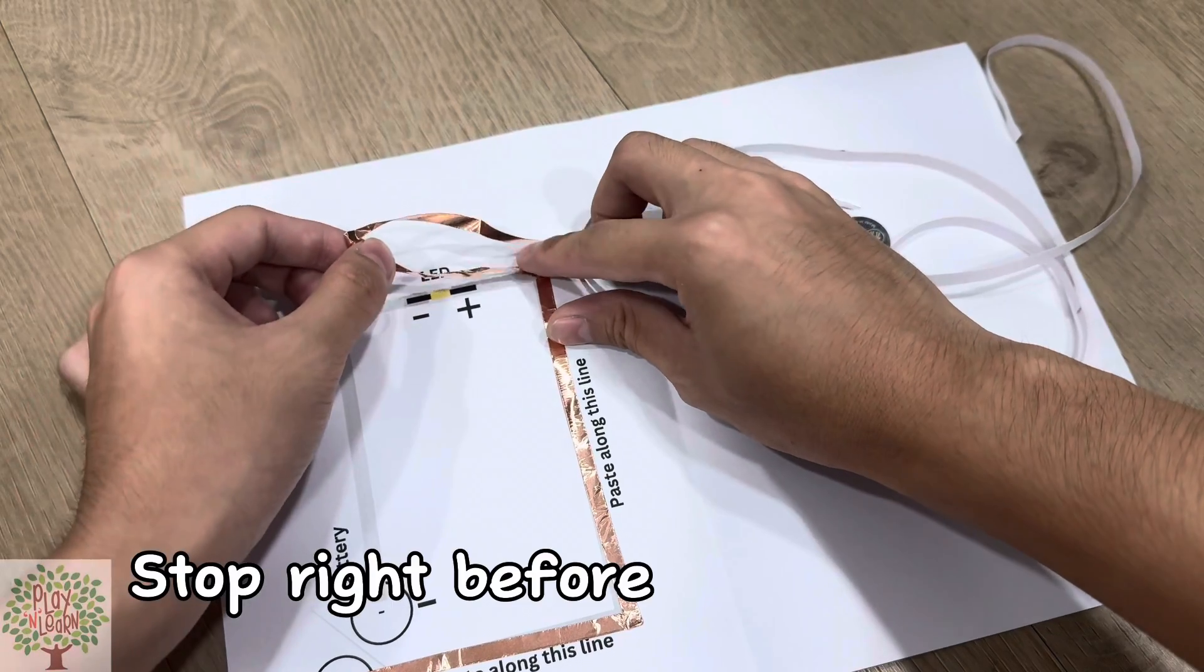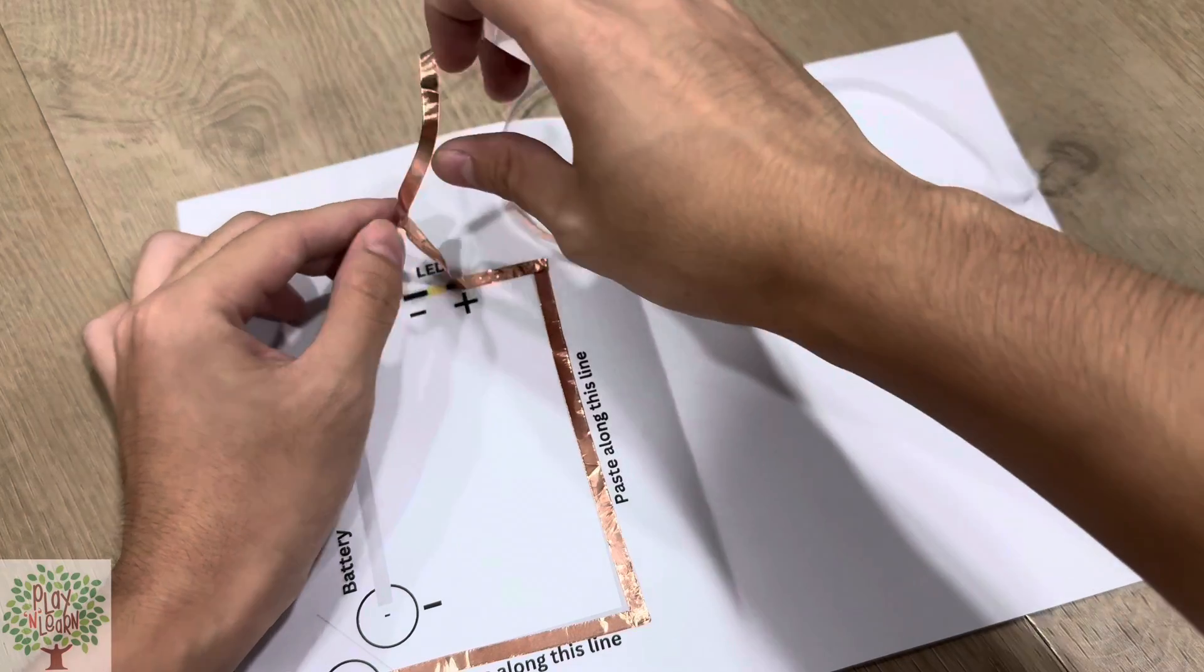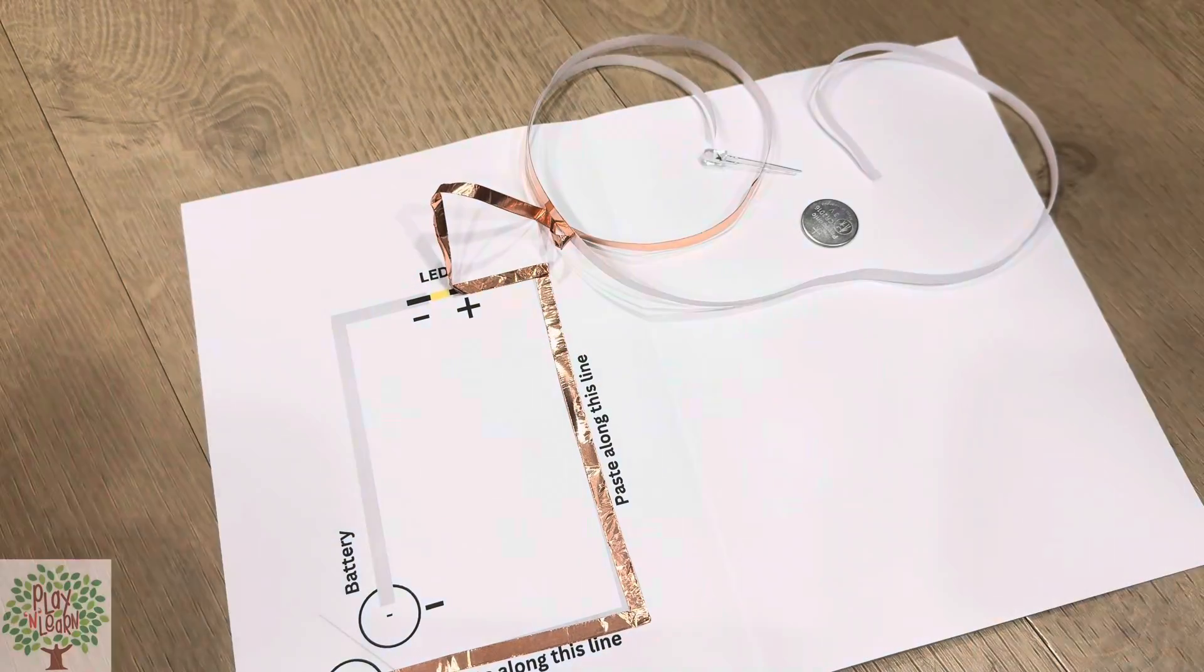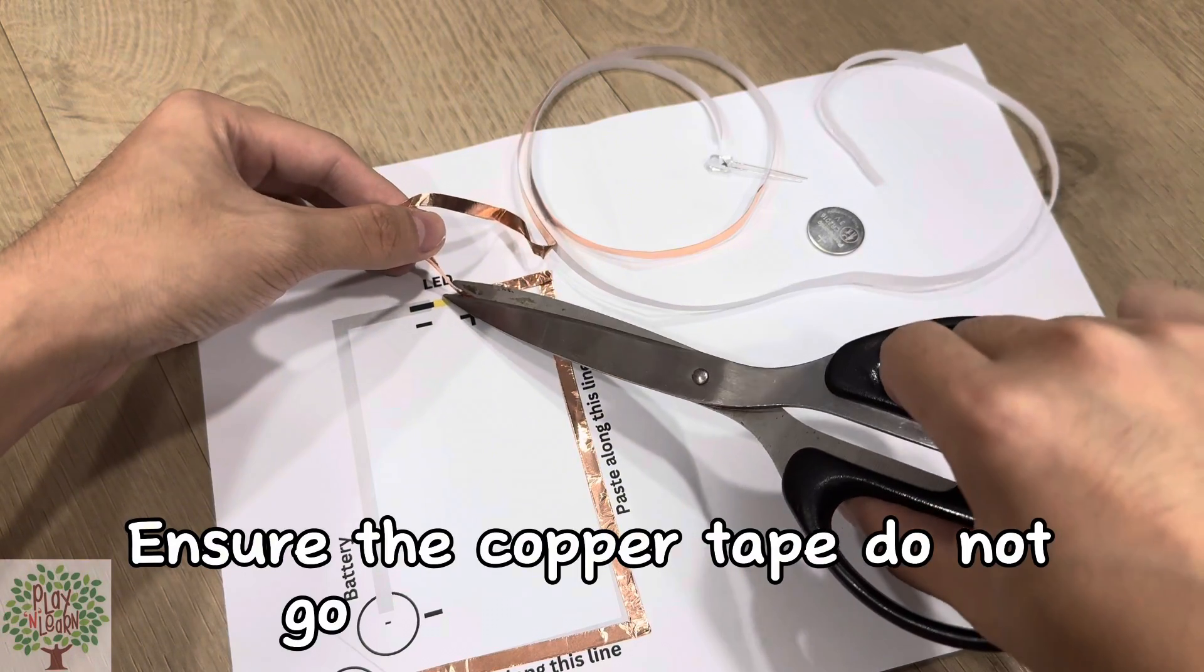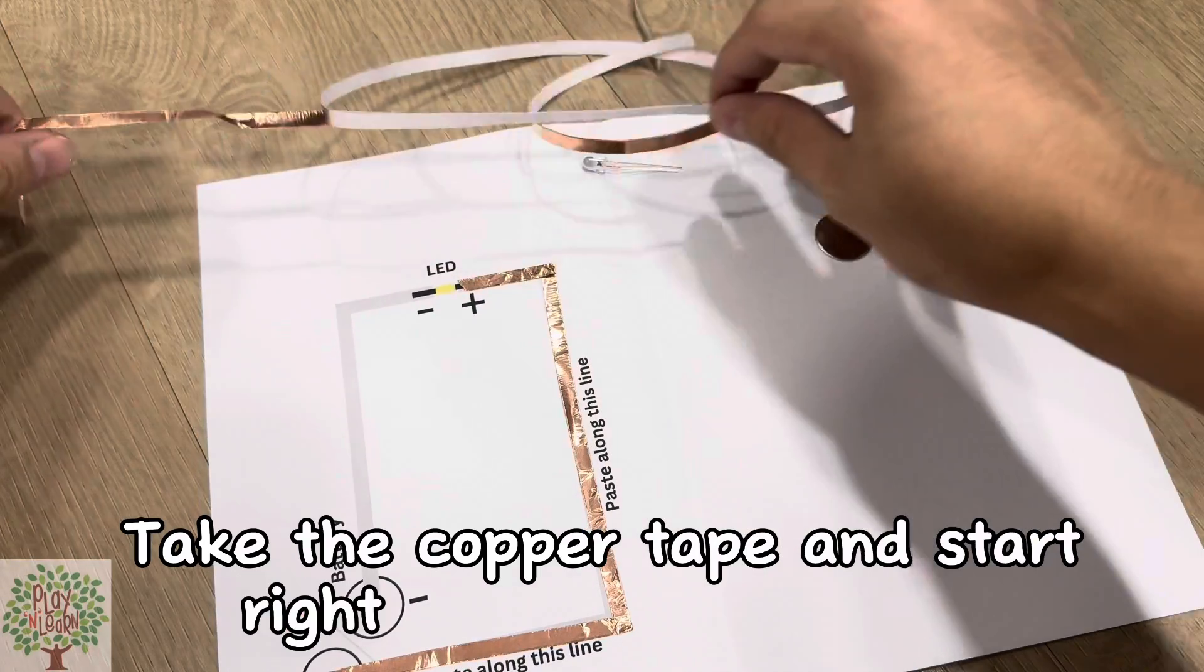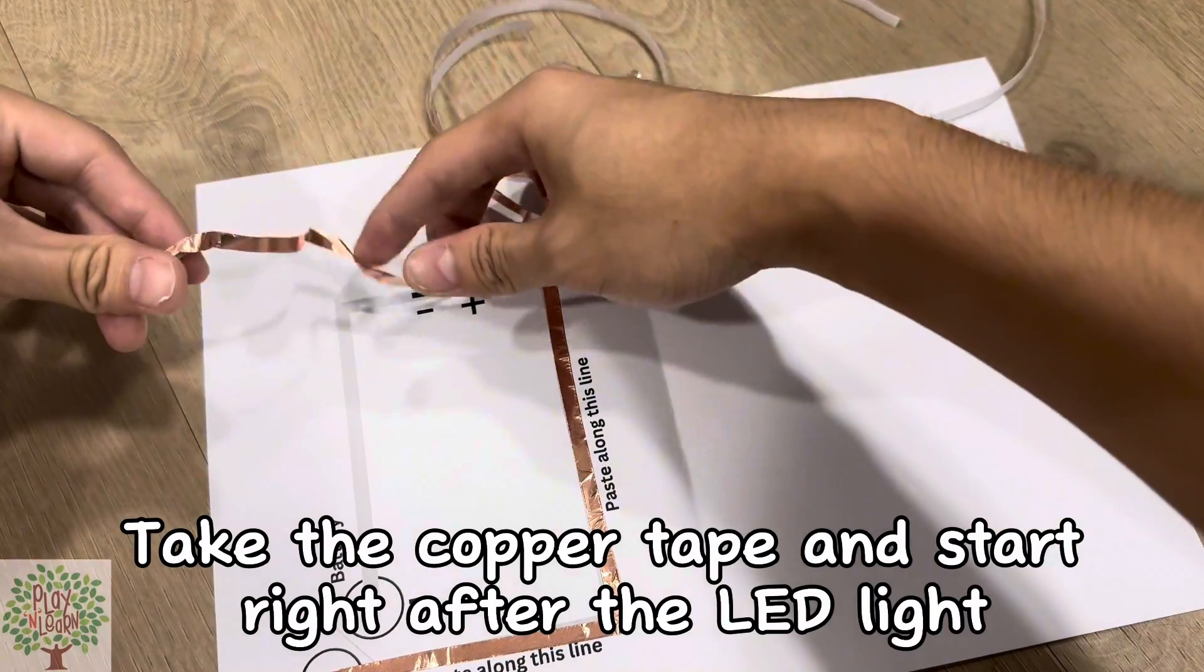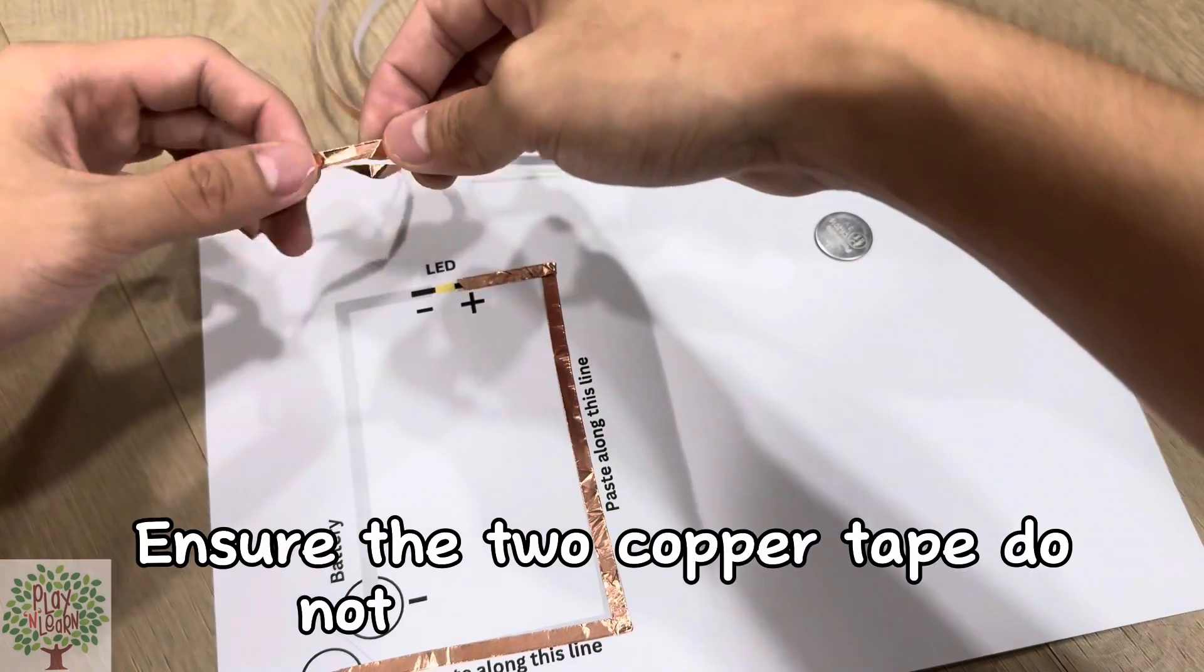Stop right before the LED light and use a pair of scissors to cut the copper tape. Ensure the copper tape does not go over the LED light. Take the copper tape and start right after the LED light. Ensure the two copper tapes do not touch each other.